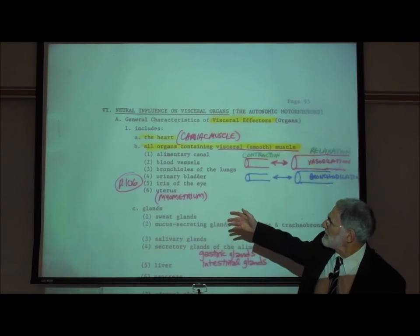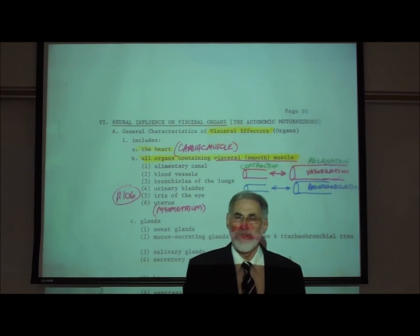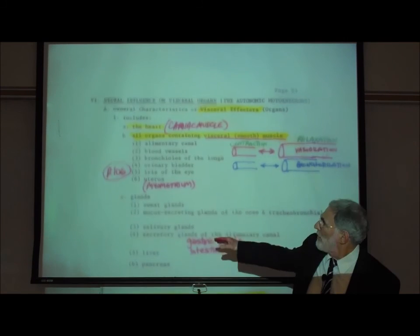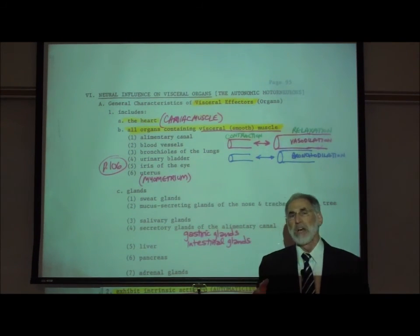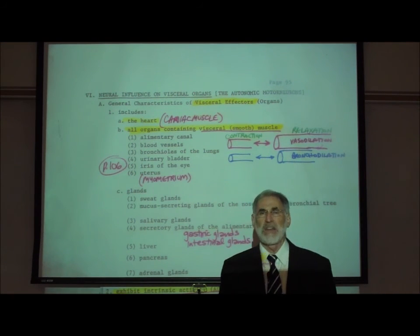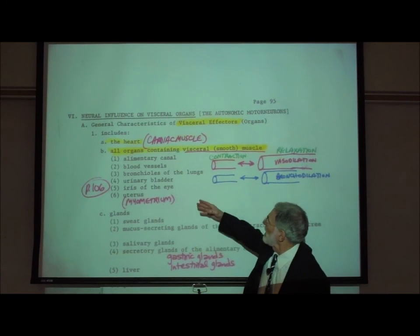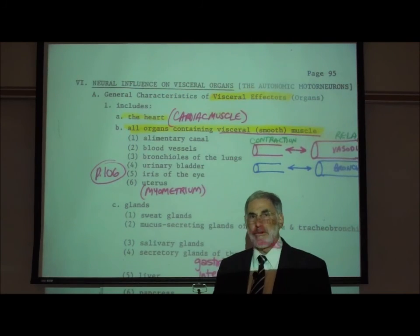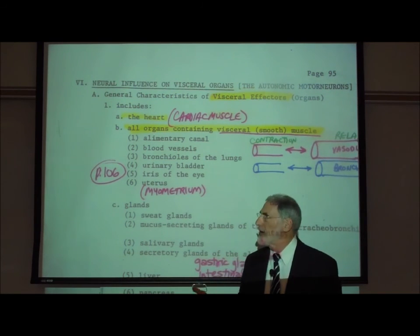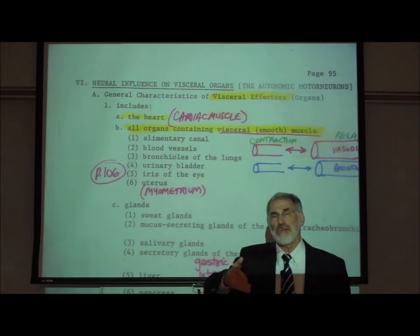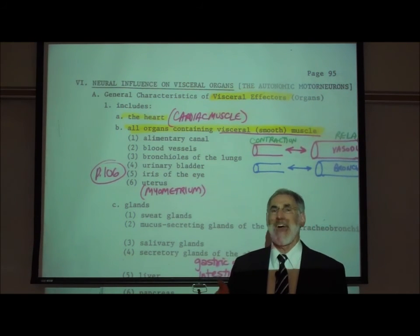Autonomic motor neurons, by innervating cardiac muscle, affect the rate of activity of the heart. Autonomic motor neurons also innervate visceral smooth muscle. Some locations include the alimentary canal — the long digestive tract or intestinal tract tube that extends from the mouth to the anus — and the autonomic motor neurons can affect peristaltic activity.